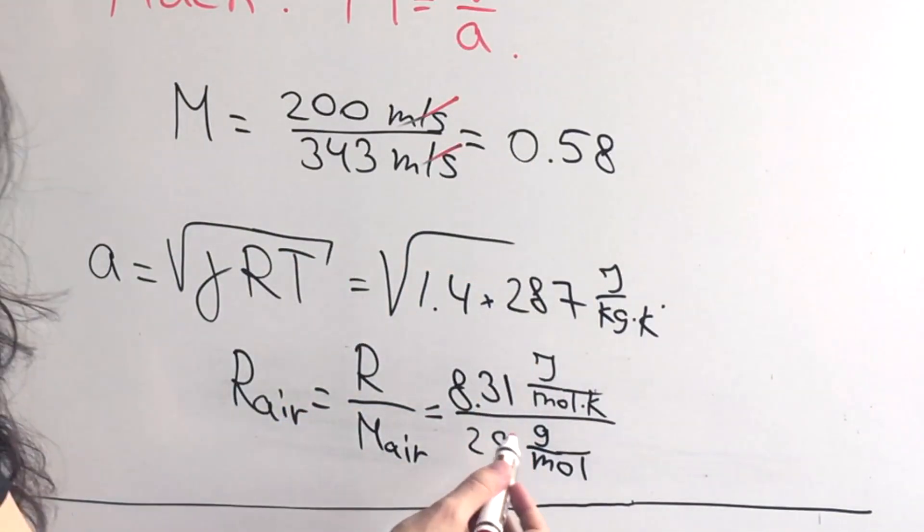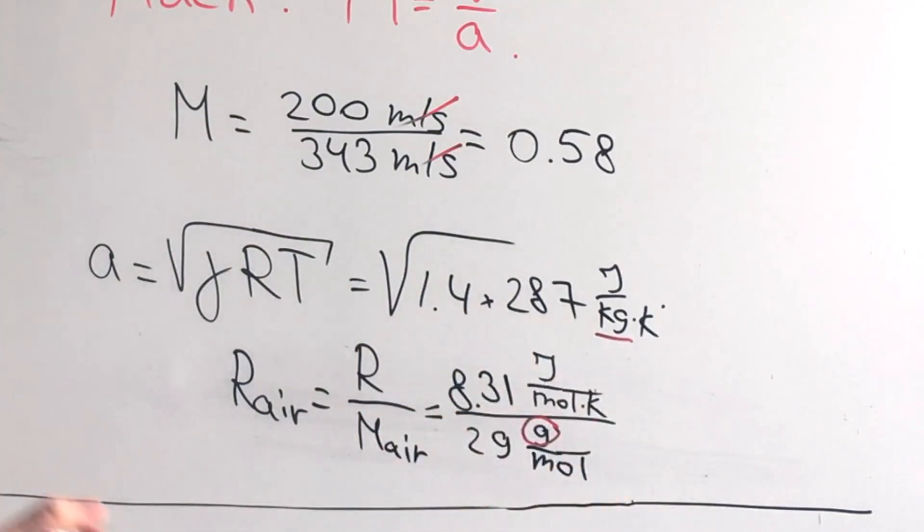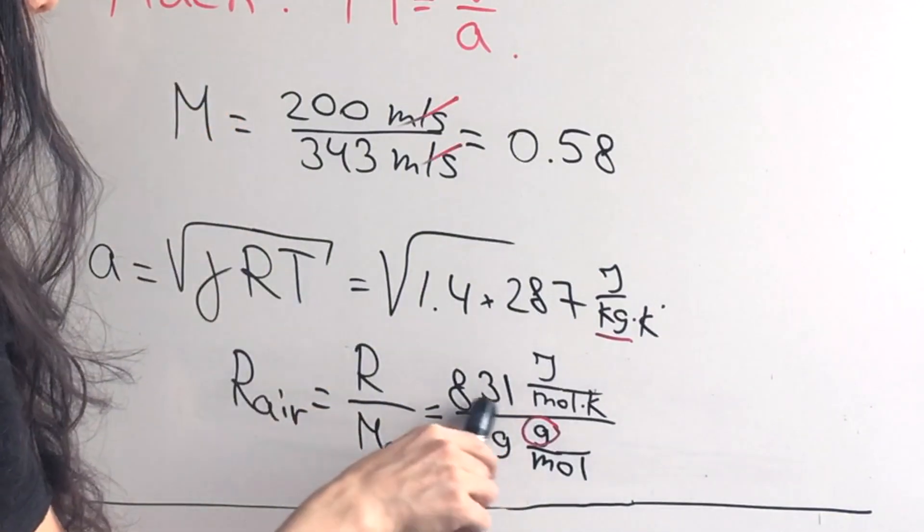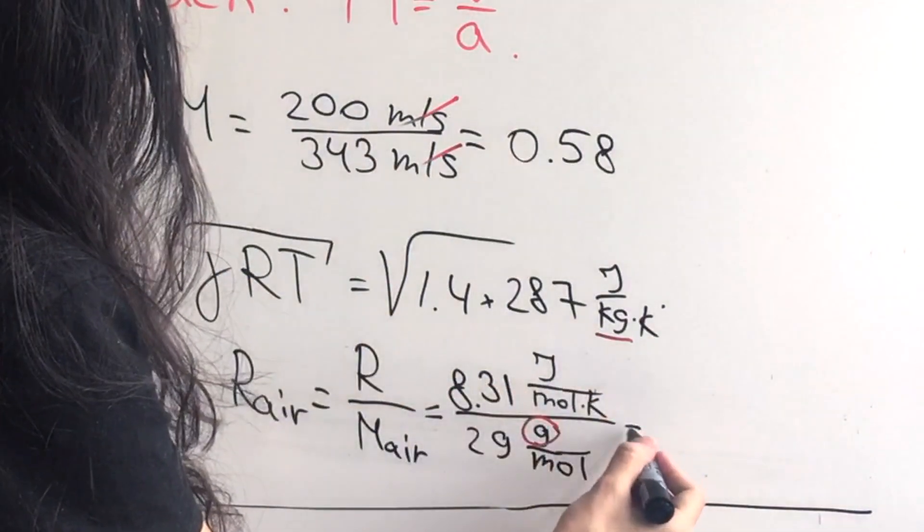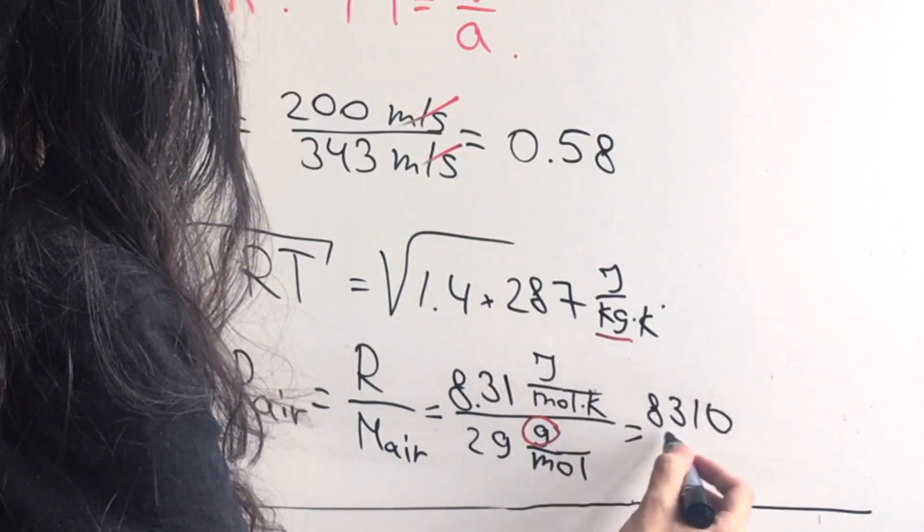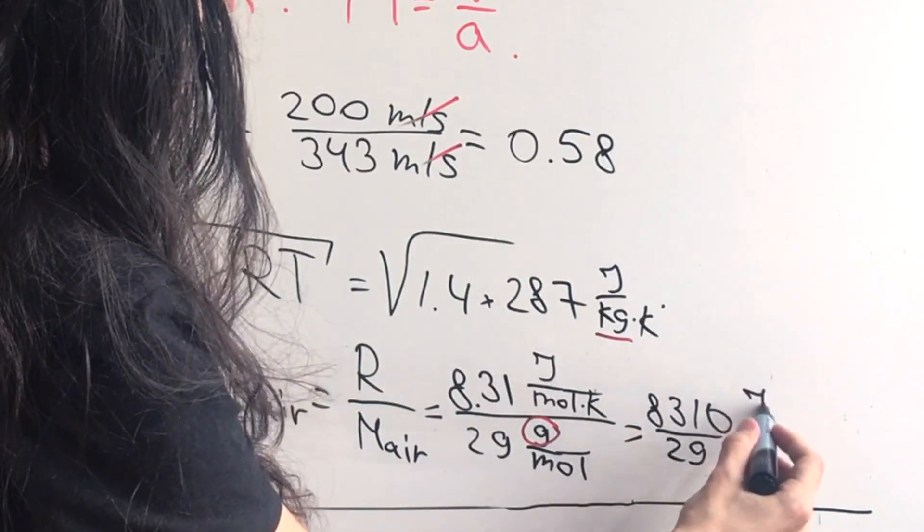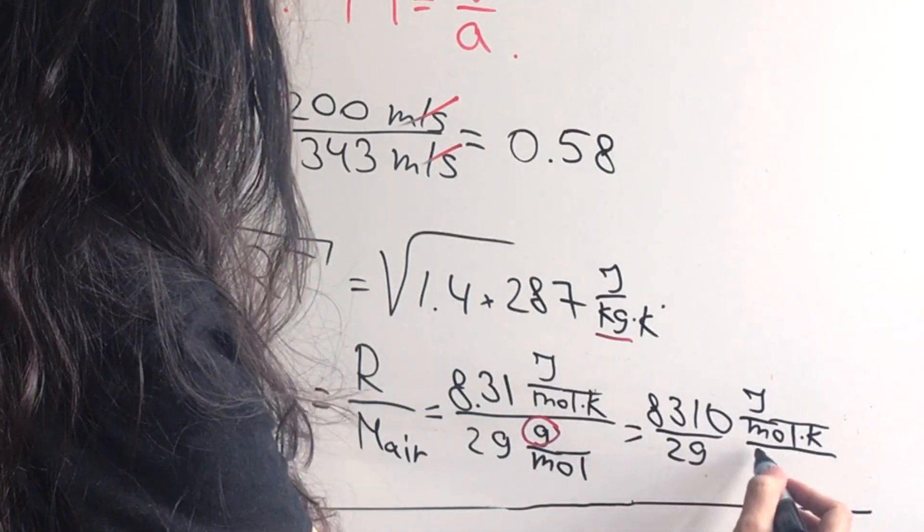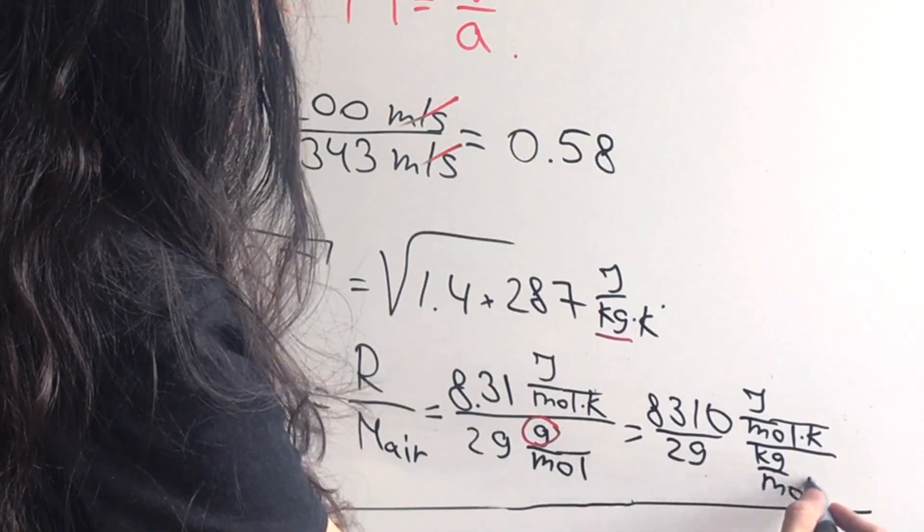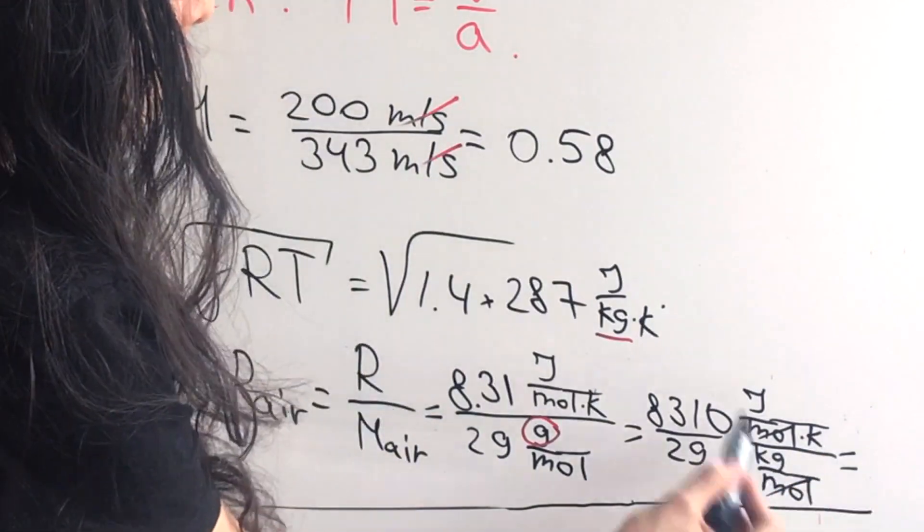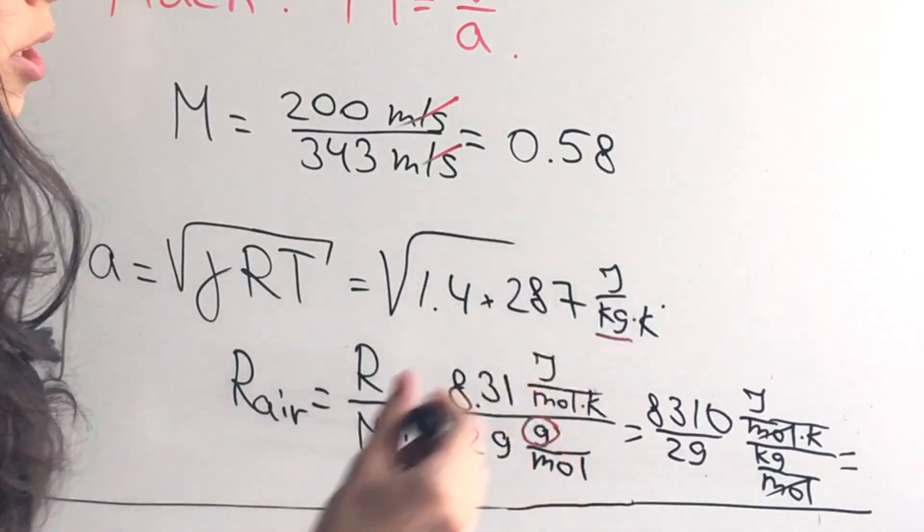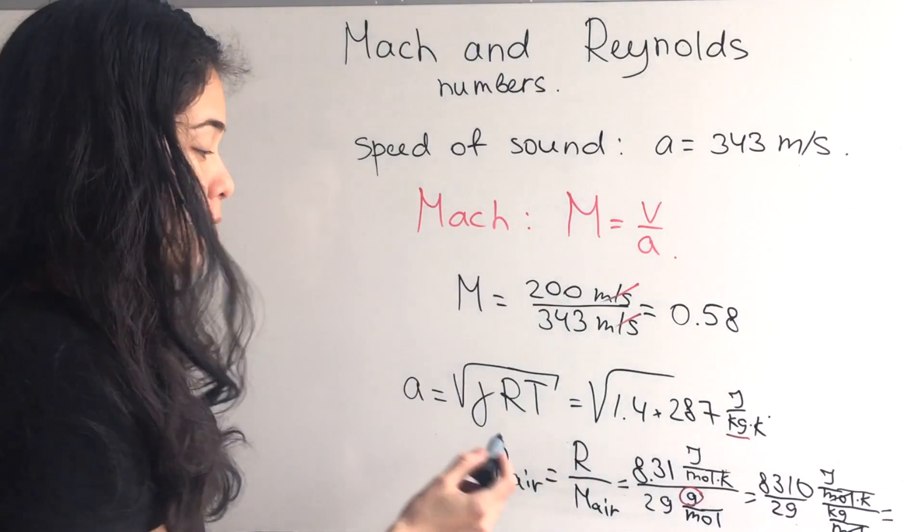Notice that we have grams here and kilograms here, so we have to express grams in kilograms to get our gas constant for air. You can divide 29 by 1000, which means you multiply the numerator by 1000. That will give you 8310 divided by 29. The moles will cancel, the Kelvins will go down, and this value will give us 287 joules per kilogram per Kelvin.